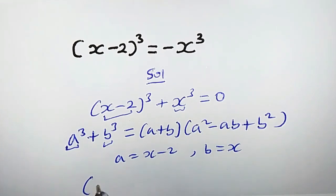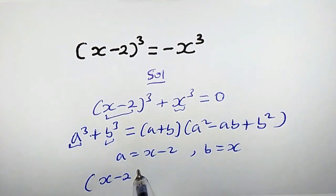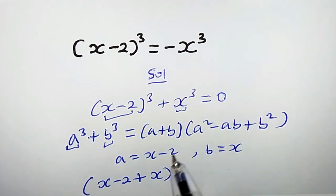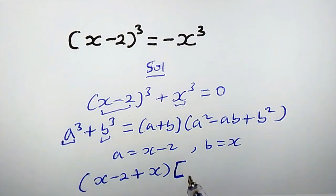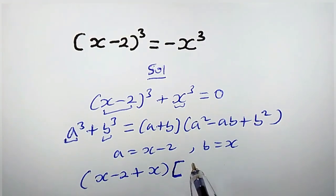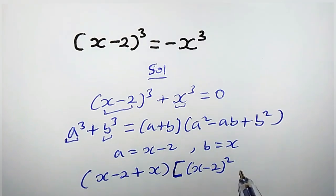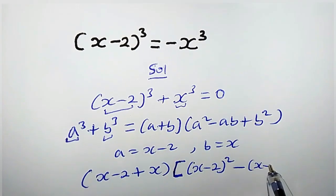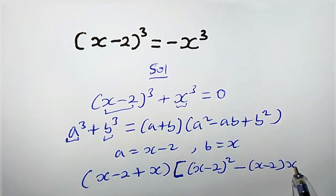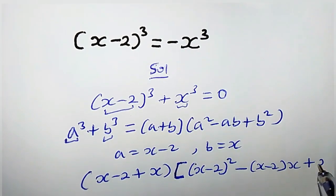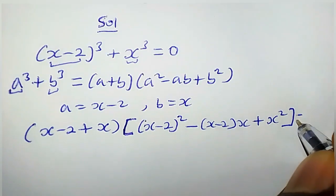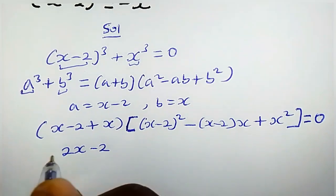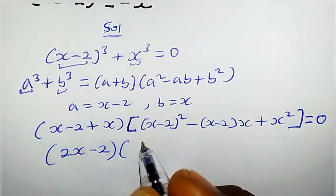What is a? x minus 2. So we have (x minus 2) plus x, times the bracket: what is a squared? That is (x minus 2) squared, minus a times b which is (x minus 2) times x, plus b squared which is x squared. So we close the bracket and set it equal to zero.